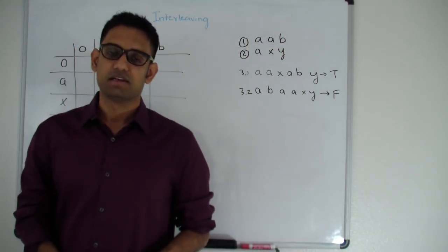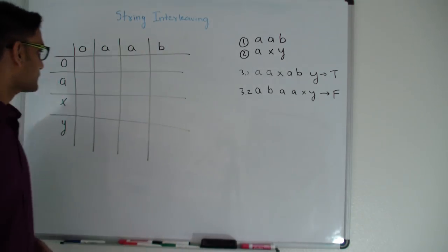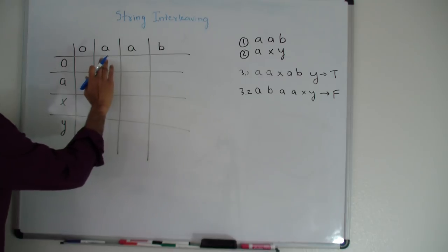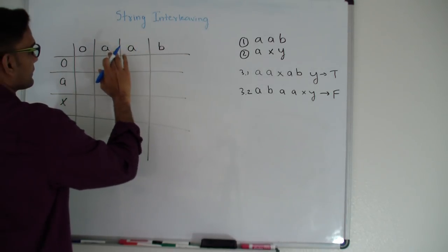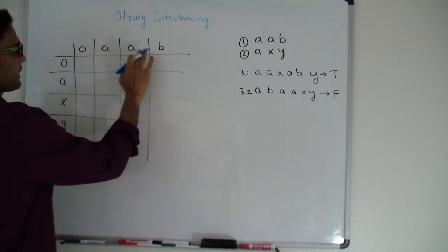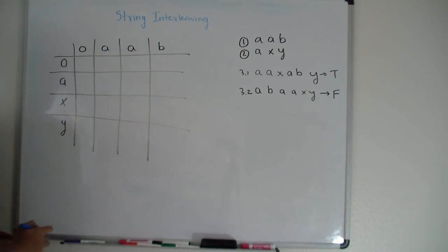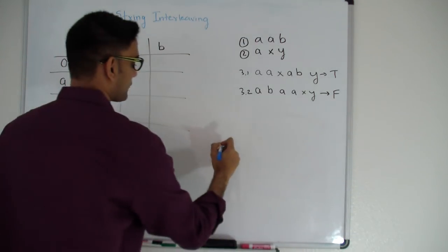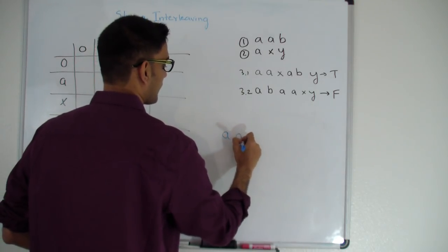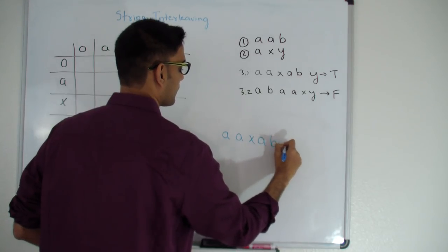So how do we solve this question? We'll use dynamic programming. Here I have a two-dimensional matrix where the columns are made up of 'aab' and the rows are 'axy', and my third string is 'aaxaby'.